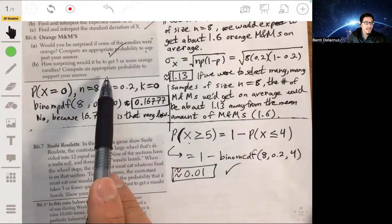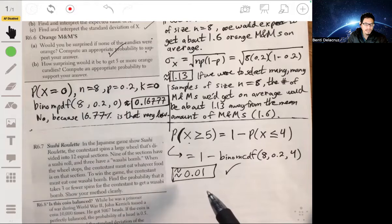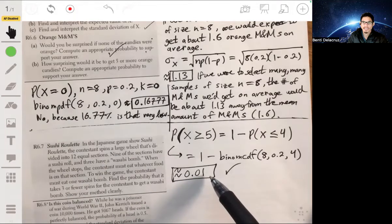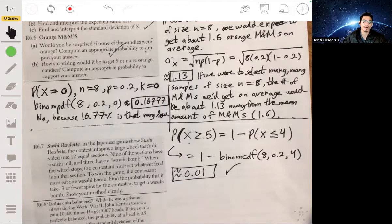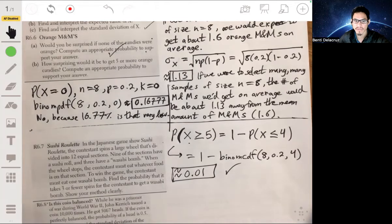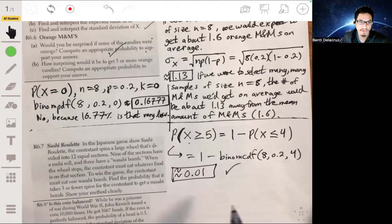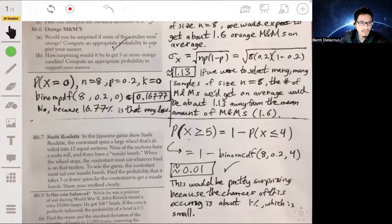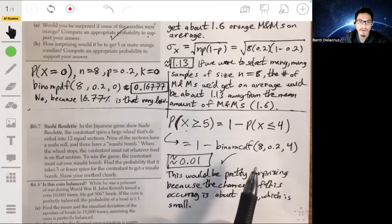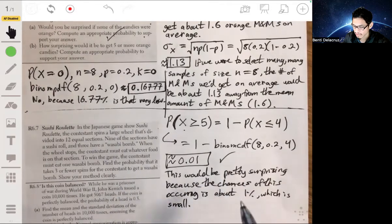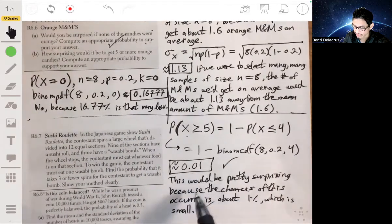So how surprising would it be to get five or more candies? Well, you would only have about a 1% chance. We would say that it would be surprising because this only occurs about 1 in 100. Make sure you think of the context. This would be pretty surprising because we have such a low chance of occurrence. Make sure you write your answer in context and demonstrate to your teacher or professor that you know what you're doing. Don't just give a calculation without any explanation.